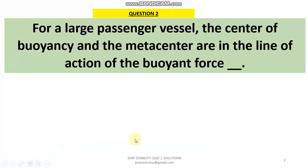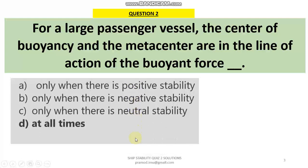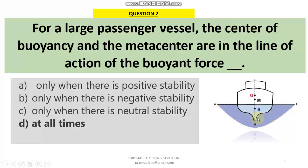Question 2: For a large passenger vessel, the centre of buoyancy and metacentre are on the line of action of the buoyant force at all times. We always need to have the centre of buoyancy B and metacentre M in the same line. If the vessel heels, the line between G and B may change, but the centre of buoyancy and metacentre must always remain in the same line — that is the fundamental idea of ship stability calculations.